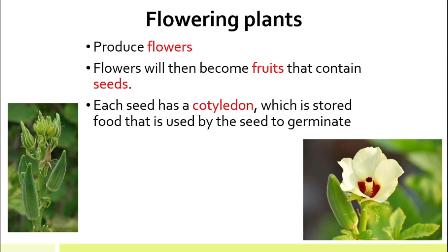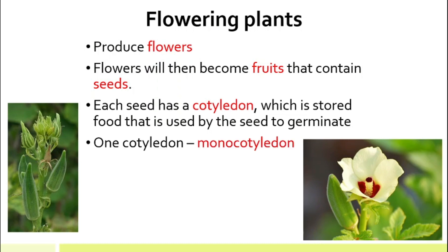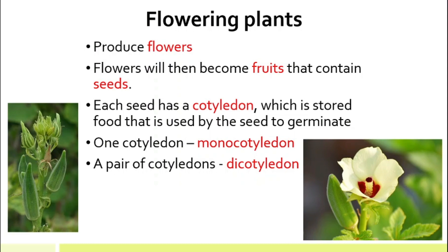What is a cotyledon and what does it do? The cotyledon is actually a place where the seed stores food, and this food is very important because seeds use it to germinate — meaning they grow into a new plant. If a seed has only one cotyledon, it is grouped under monocotyledon. If a seed has a pair of cotyledons, it is grouped under dicotyledon.